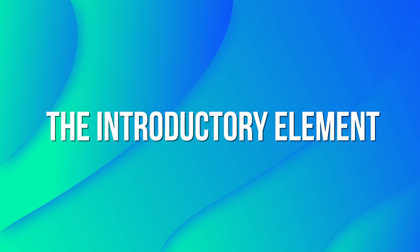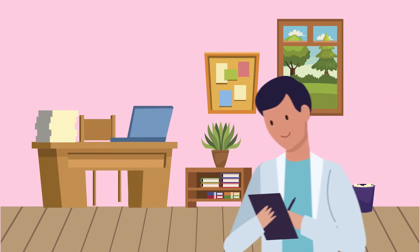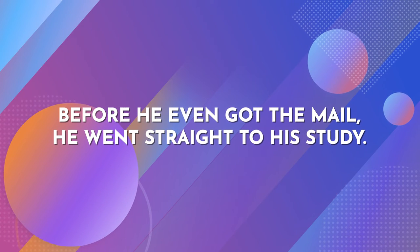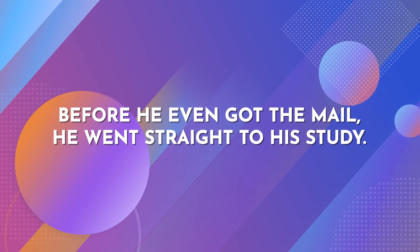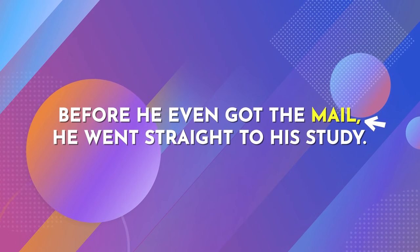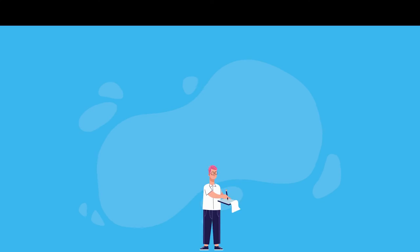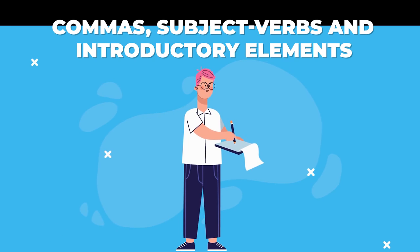Mistake 3: The Introductory Element. If you start your sentence with an introductory word, it should be followed by a comma. For example, let's analyze this sentence: "Before he even got the mail, he went straight to his study." This is a sentence that requires a comma after the word "mail", because the word "before" is an introductory word. So there you have it — the top 3 mistakes to avoid when writing poetry: commas, subject-verb agreement, and introductory elements.